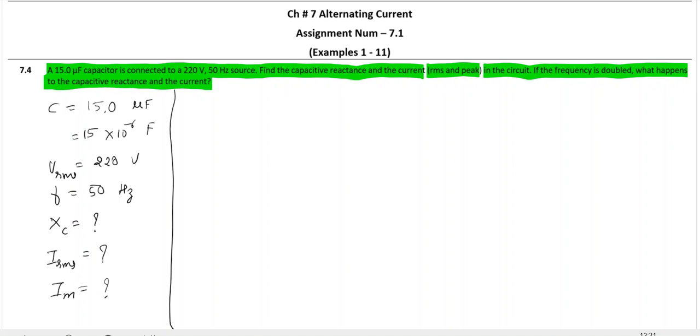So let us start with XC, capacitive reactance. XC is 1 by omega C. So this is the first answer.